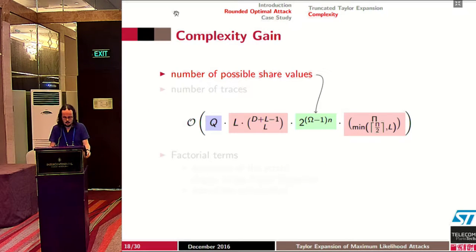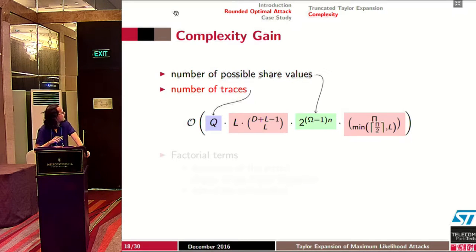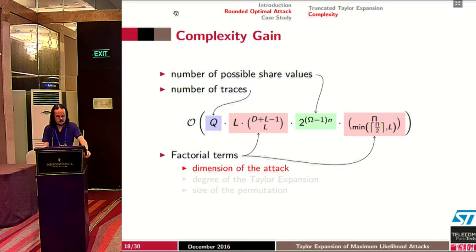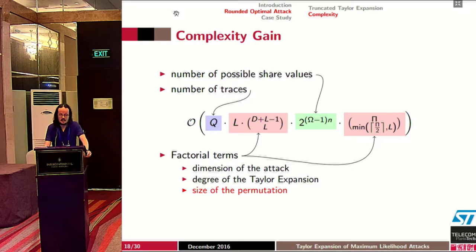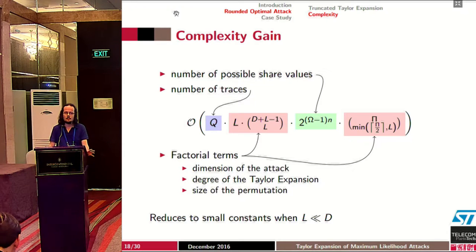Looking at the complexity of the new attack, it still depends on the number of possible share values, the number of traces, but now it also depends on two factorial terms depending on the dimension D, the degree L of the Taylor expansion, and the size of the permutation. Importantly, when the degree L is small compared to the dimension D, these two factorial terms are small, and as a consequence this complexity is also small.